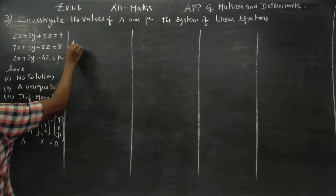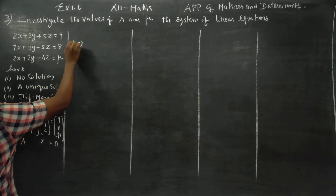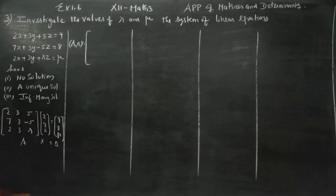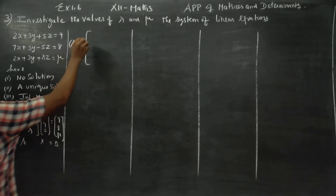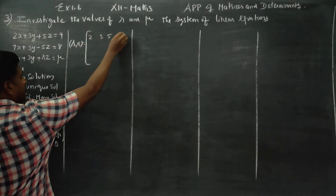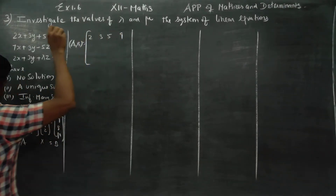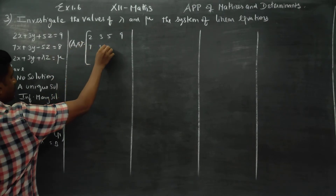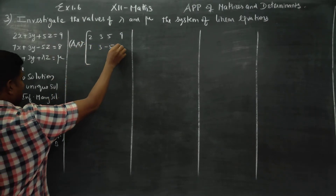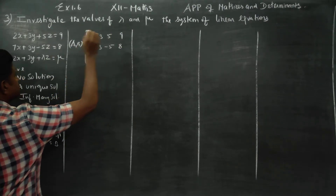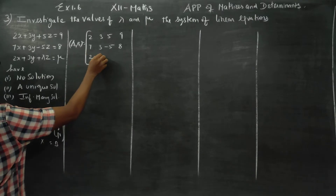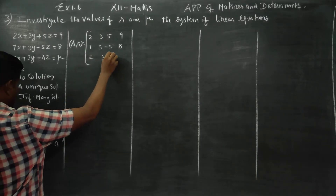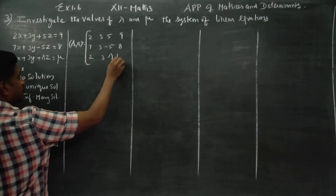Write the augmented matrix [A|B]: row 1 — 2, 3, 5, 8 (wait, 9); row 2 — 7, 3, minus 5, 8; row 3 — 2, 3, lambda, mu.